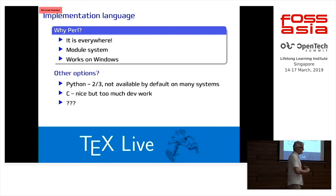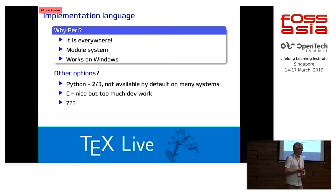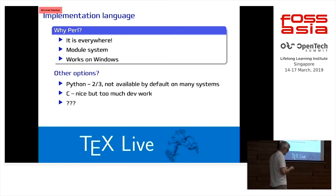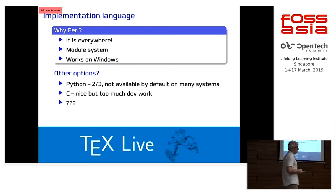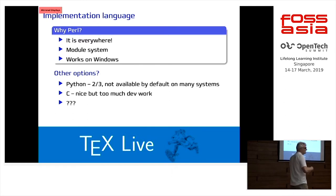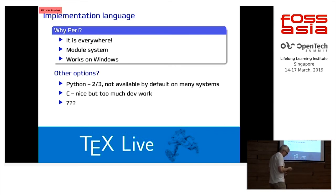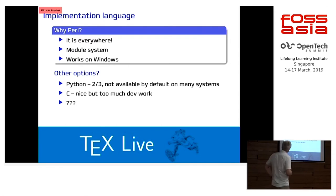Python is often mentioned, and there is some activity there. The problem with Python: first it's not available everywhere out of the box. And then, Python 2 versus Python 3 — well, ping. C would be nice — it's portable, you can get it everywhere — but it's a huge development time. Most of the time you do text wrangling: reading lines, parsing, and doing stuff. It's much more work in C. If someone pays me, I would rewrite it in C, but not otherwise.